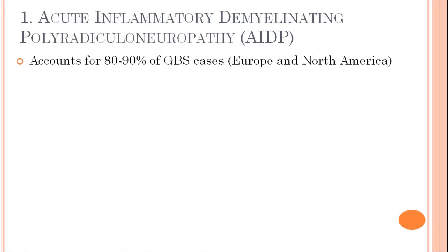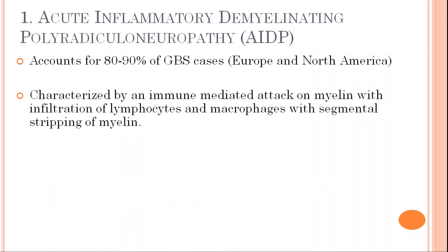Let's start with AIDP — acute inflammatory demyelinating polyradicular neuropathy. This type of GBS is seen in Europe and North America, and it accounts for about 80 to 90 percent of GBS cases. It is characterized by an immune-mediated attack on the myelin sheath with infiltration of lymphocytes and macrophages with segmental stripping of myelin.